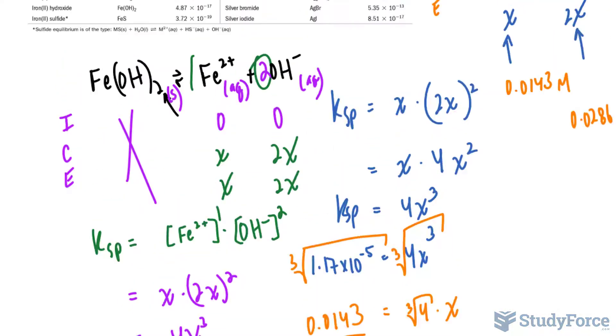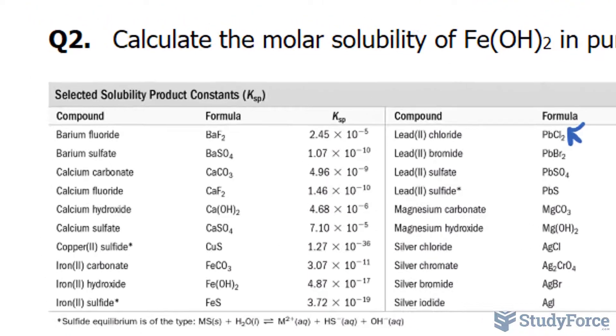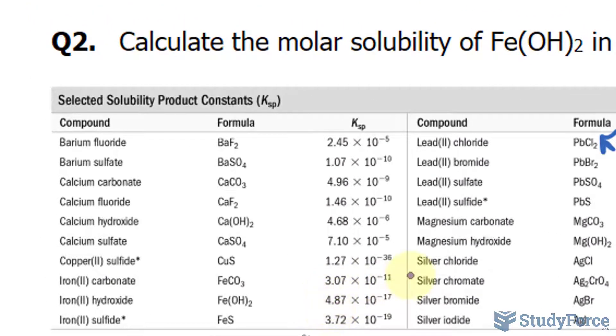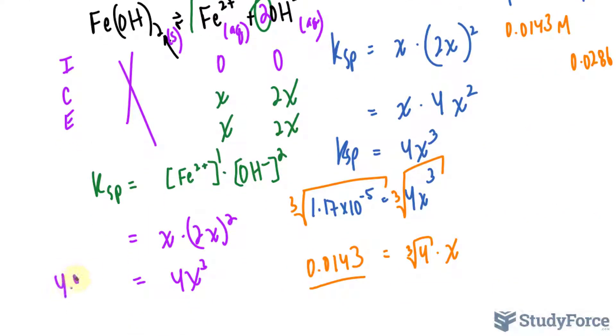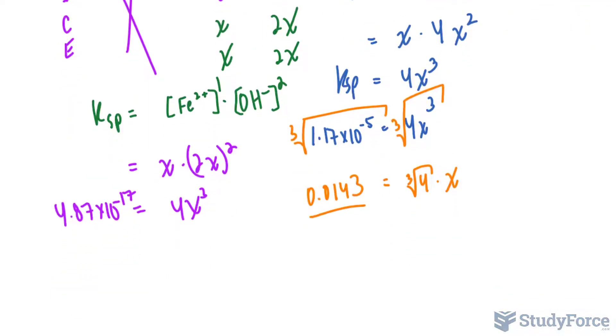We'll locate Ksp for this molecule in this chart. And as you can see, it's right here. 4.87 times 10 to the power of negative 17. This is three significant figures. Keep that in mind.